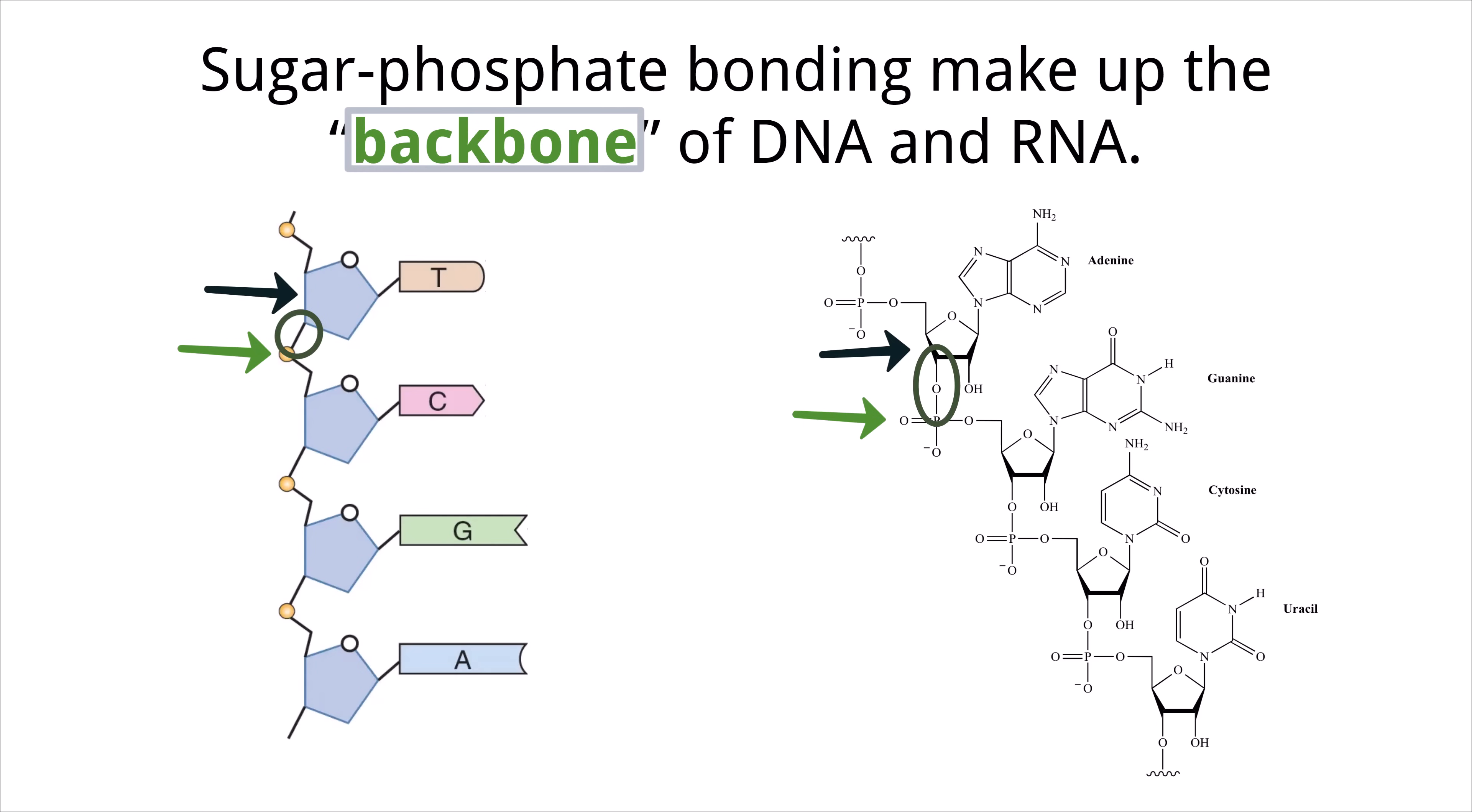So remember, the backbone of DNA and RNA is made up of these repeating phosphate-sugar bonds that link the nucleotides together. When drawing DNA and or RNA for the IB exam, these bonds must be included.